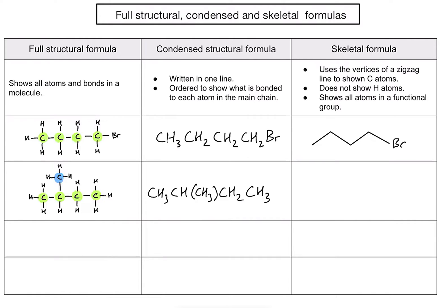For the skeletal formula, I again have four carbons, so I need a zigzag line with four vertices including the first point. There's a bond to the second carbon, third carbon, and fourth carbon. The blue methyl group is sticking off the second carbon, so I add a bond there. The four carbons sit on the four vertices, and the methyl group branches off the second carbon.